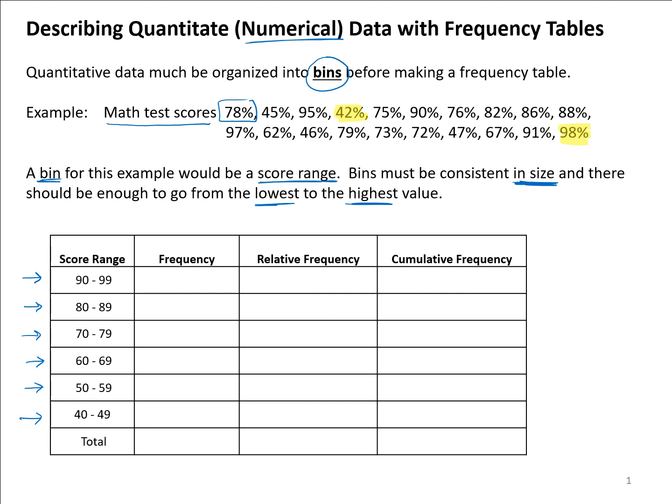Now for each of these bins we're going to count up how many grades were within them, so we're going to create the frequency. This is what makes this a frequency table. Again, it's better instead of saying frequency maybe to say what this represents—it would be number of grades. I'm just going to make the title a little more specific.